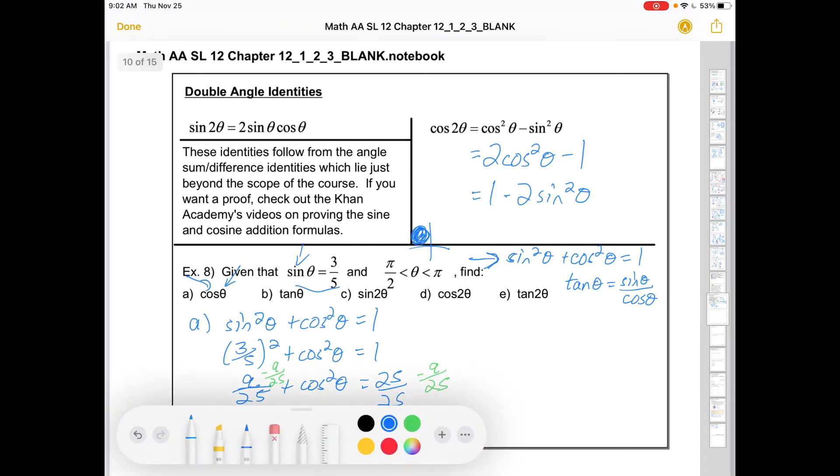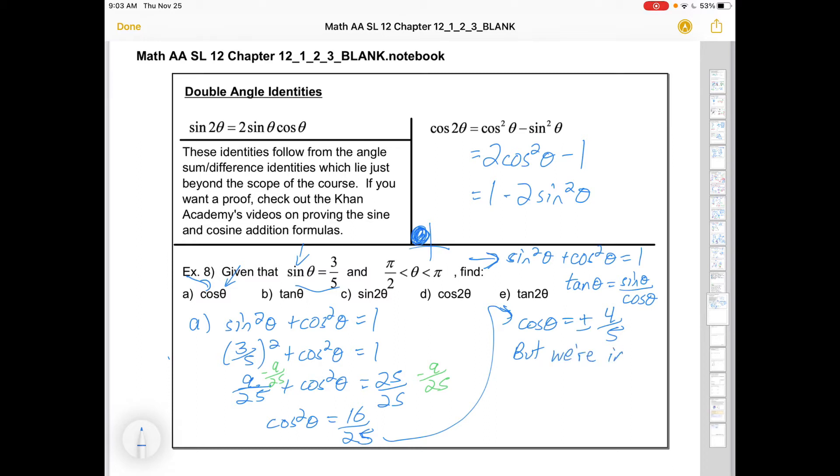And that's going to give me cos² θ equals 16/25. And then I'd square root both sides. So I'd get cos θ is the square root of 16 over the square root of 25. That's 4/5. It might be positive or negative, but we're in quadrant 2. We've established that because of the angle itself. So cos θ must be negative.